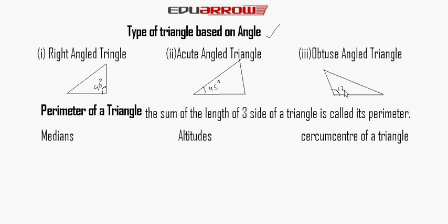Now, the perimeter of a triangle. The sum of the lengths of the three sides of a triangle is called the perimeter. If the sides are A, B, and C, then the perimeter is equal to A plus B plus C.